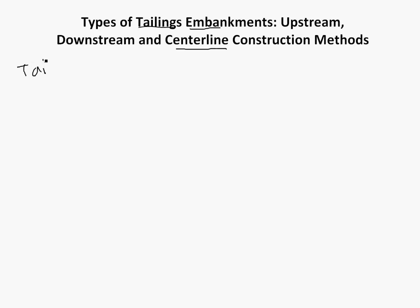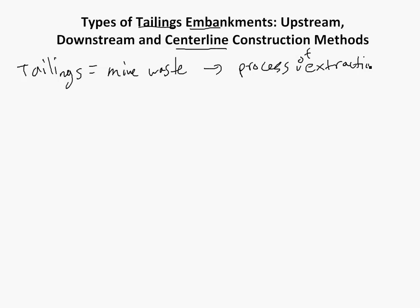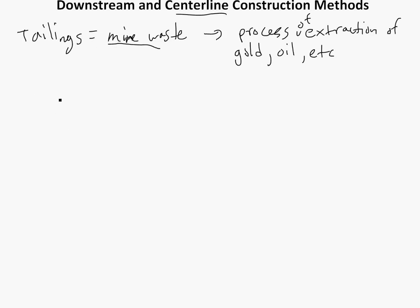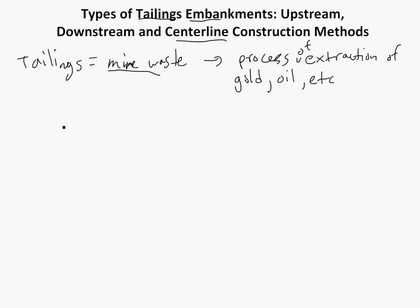Basically, tailings are just mine waste - from the process of extraction of precious metals, gold, oil, etc. This process involves a lot of waste being produced, which is a combination of water and other stuff. Mining companies and operators have a long pipe that discharges all this waste, and they have to impound it inside an embankment. There are three popular methods that are used.